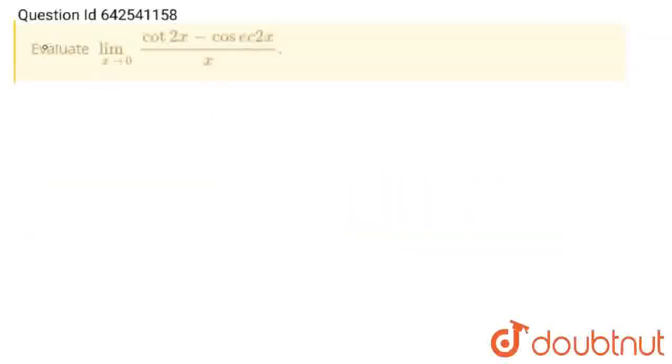Hello students, question: evaluate limit x tends to 0, cot 2x minus cosec 2x upon x. So let's solve this problem.